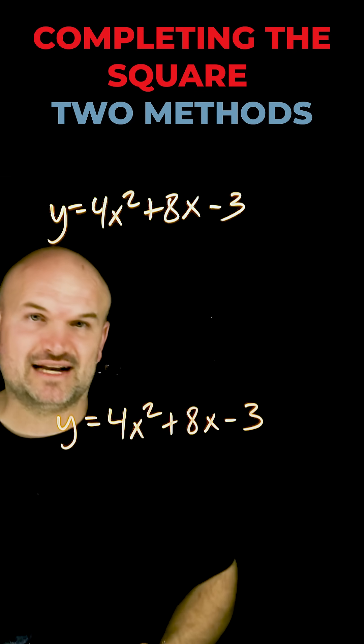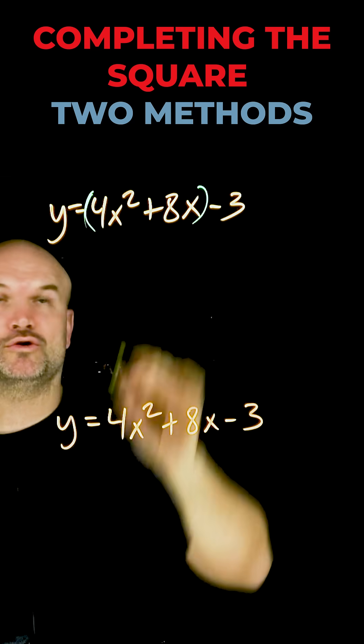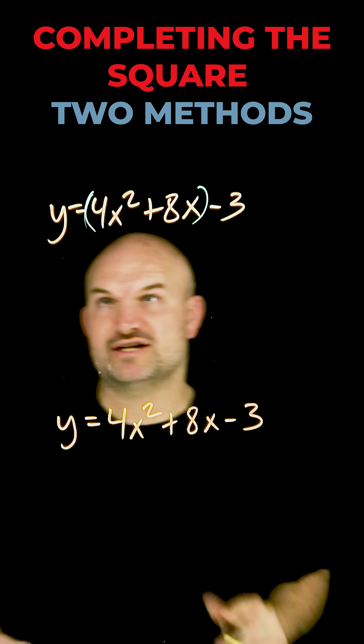If they need to identify the vertex, I like to keep everything on the same side. So I tell them to use the grouping technique, which is to group the two terms and then factor out whatever your coefficient is of x squared.